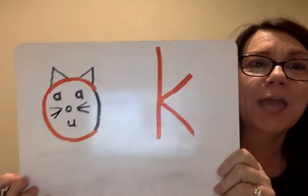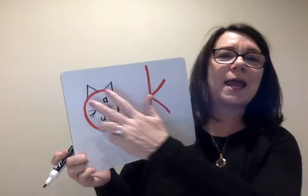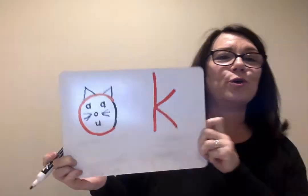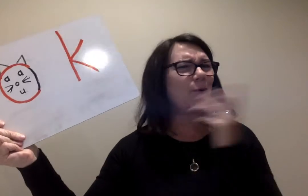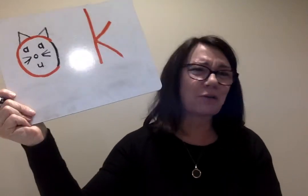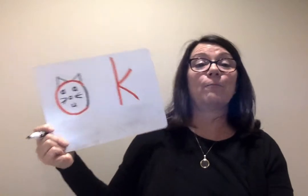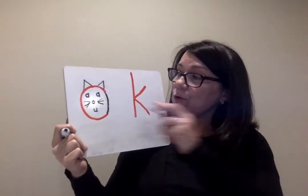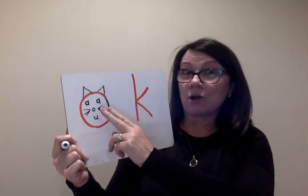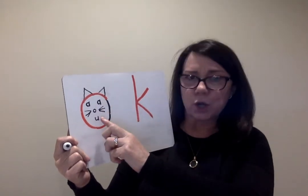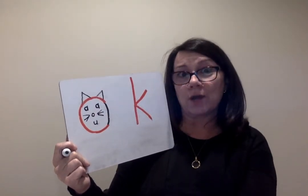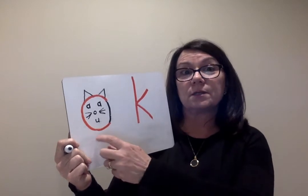Now I'm going to do the mouth — and I bet you can guess, I'm going to use another letter. Let's see if you can figure out what letter I'm using to make our cat's mouth. U. So we've got A, O, and U for our cat's face. Why would I use letters for the cat's face? Because if you hear these vowels — A, O, or U — as the second sound of a word, short or long, it's going to start with C.